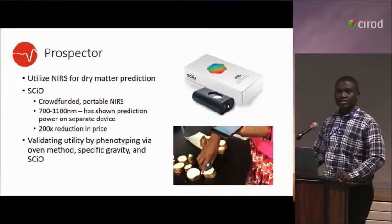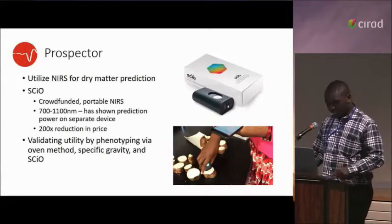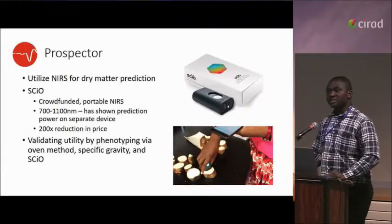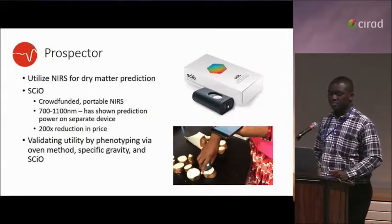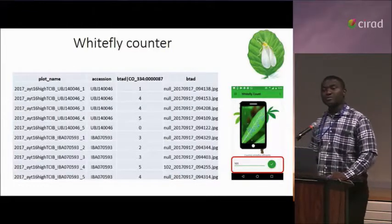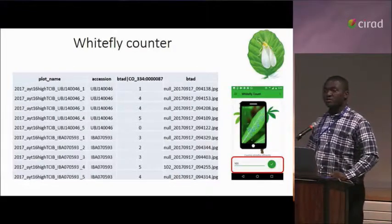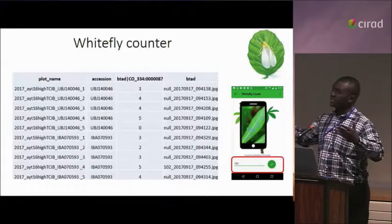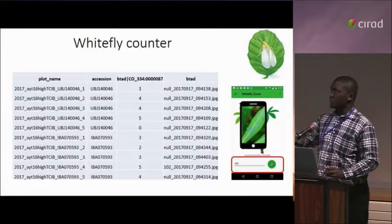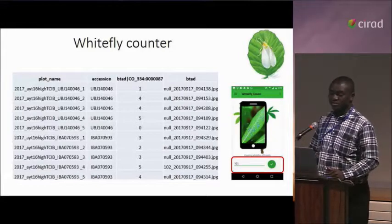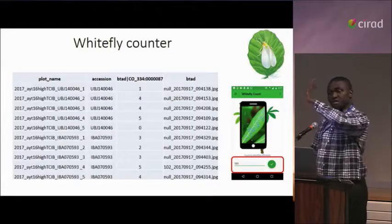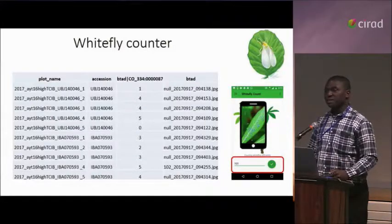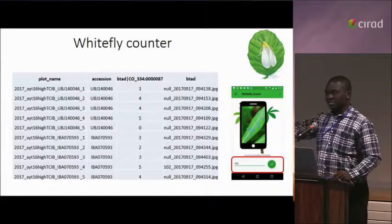There is another tool we are testing called SIO, used with a device called Prospector, for estimating dry matter in the field in real time — it is being tested at the moment. We also have an app called WhiteFlightCounter, which we use for counting in the field and which has ontology integration. Once the dataset is exported from the app, it is formatted for easy upload into the database. We also have apps for brown streak estimation — estimating the proportion of brown streak — as well as an app for oxidation, among other apps.